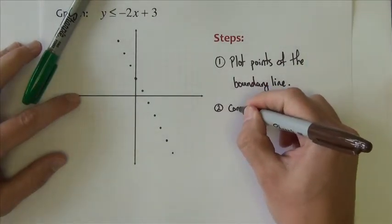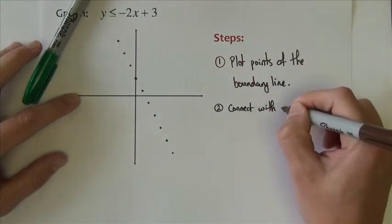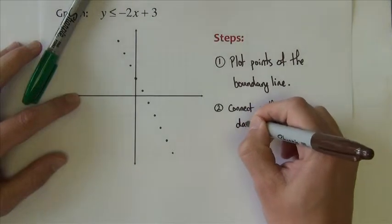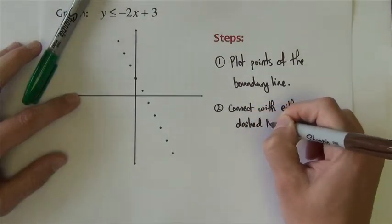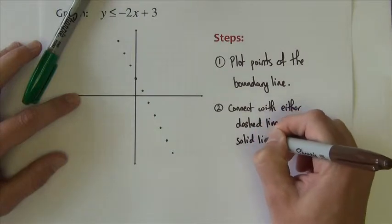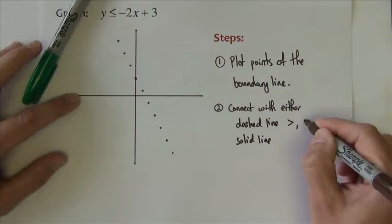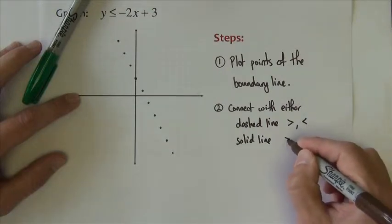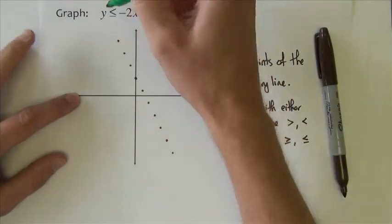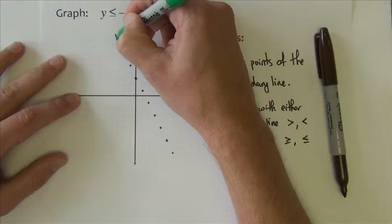The second step is to connect with either a dashed line or a solid line. We use a dashed line if we have greater than or less than, a solid line for greater than or equal, less than or equal. This inequality has an equal to, so we're going to connect these with a solid line.